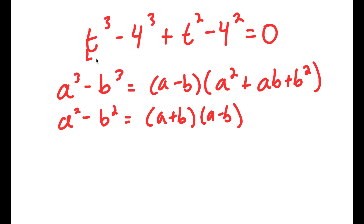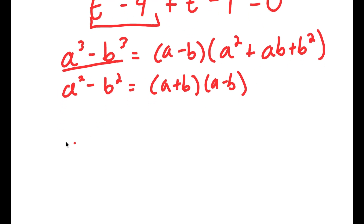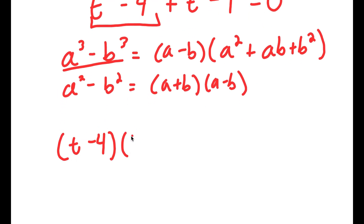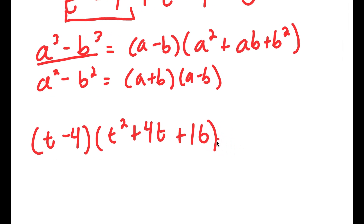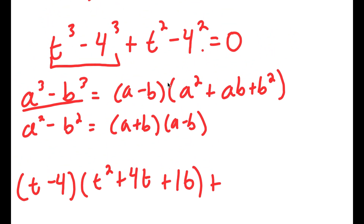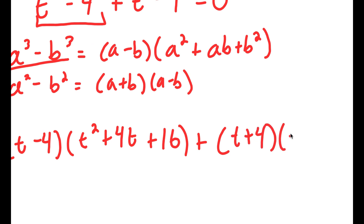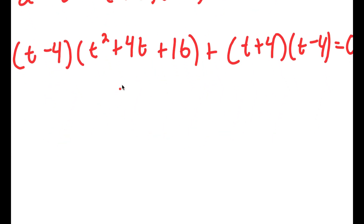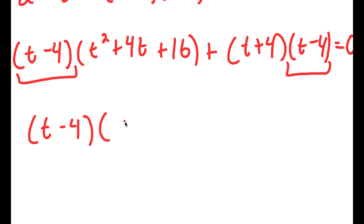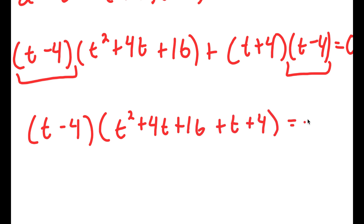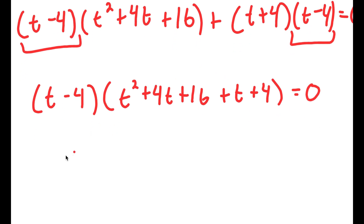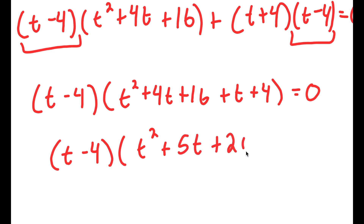So for t to the power of 3 minus 4 to the power of 3, applying the difference of cubes property, I get t minus 4 times t squared plus 4t plus 16, plus t squared minus 4 squared, which equals t plus 4 times t minus 4. Factoring this out, I get t minus 4 times the quantity t squared plus 4t plus 16 plus t plus 4, and this is equal to 0.